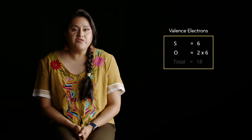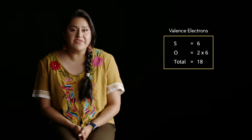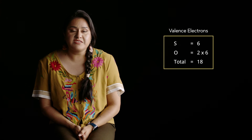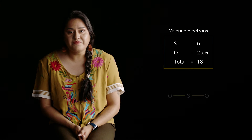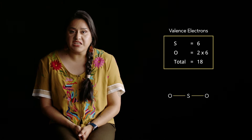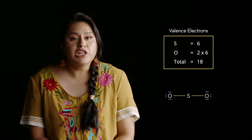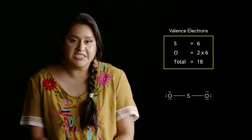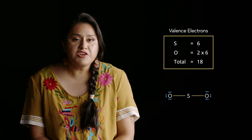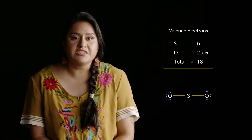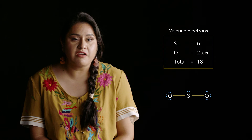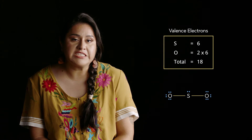Now let's do the same analysis for a very similar molecule, sulfur dioxide. Sulfur and oxygen each have six valence electrons, so 18 in all. Sulfur is less electronegative, so it goes in the middle. Now let's put in lone pairs on each oxygen. We have only used 16 electrons, so let's put a lone pair on the sulfur to get up to 18.